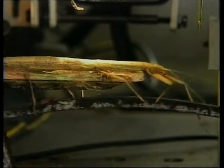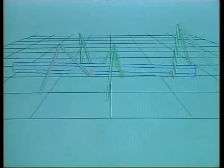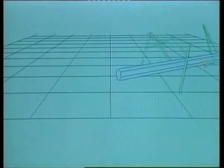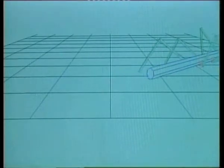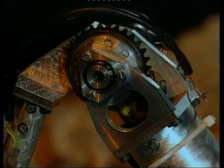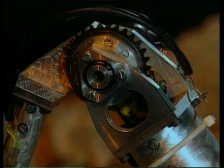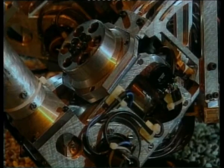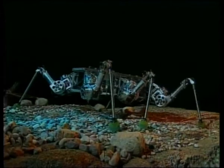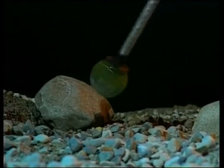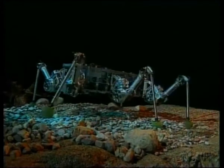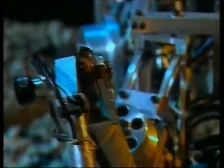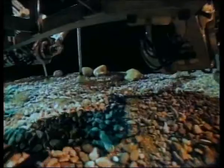The stick insect Carausius morosus is a very good example to learn from nature. Neurobiological investigations have shown that the motion of the legs is generated with a decentralized control architecture. This control structure and the geometry have been adopted for the six-legged robot MAX. Each leg has its own controller that coordinates the motion of the leg. The leg controllers communicate with each other to generate the overall motion of the robot.